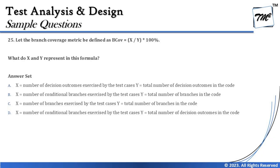Option A says x represents number of decision outcomes exercised by the test, and y represents total number of decision outcomes in the code. A decision outcome is a conditional branch, but for branch testing, x counts not only conditional but also unconditional branches. Unconditional here means when a false branch has no node to execute — there's always a true and false output from a condition, and false doesn't always do something. So branch coverage also measures unconditional branches — that's the hairline difference between branch and decision coverage.